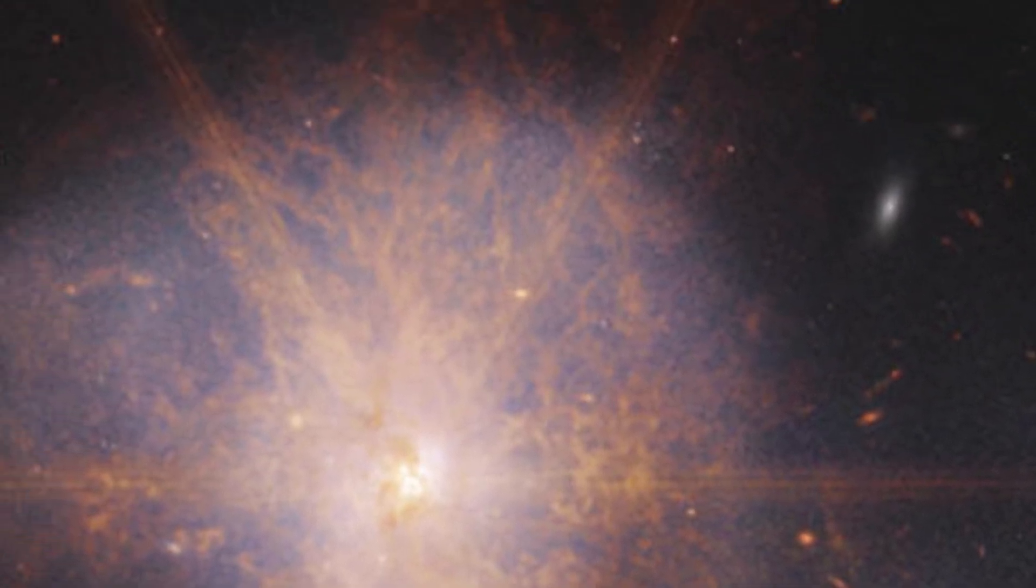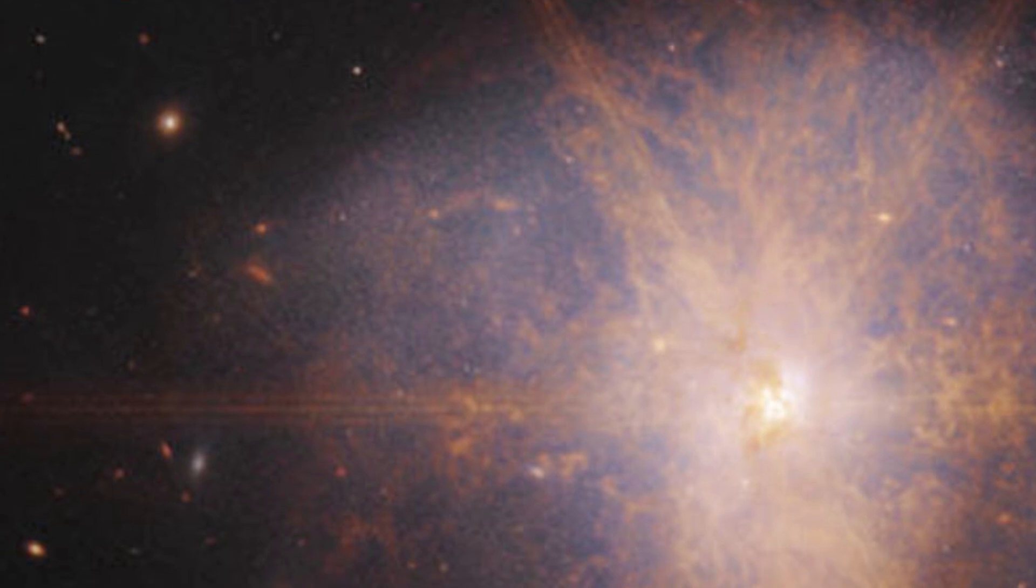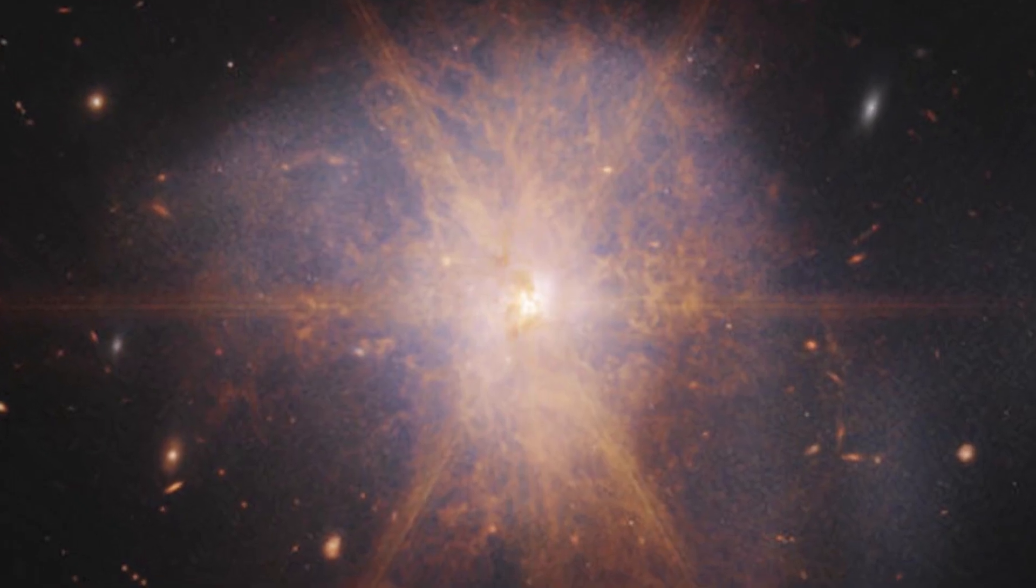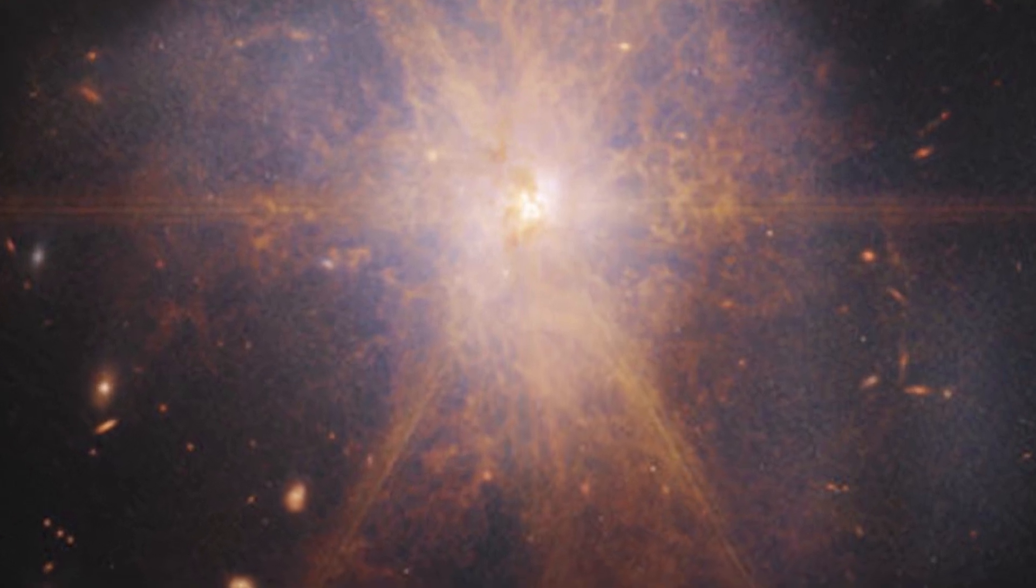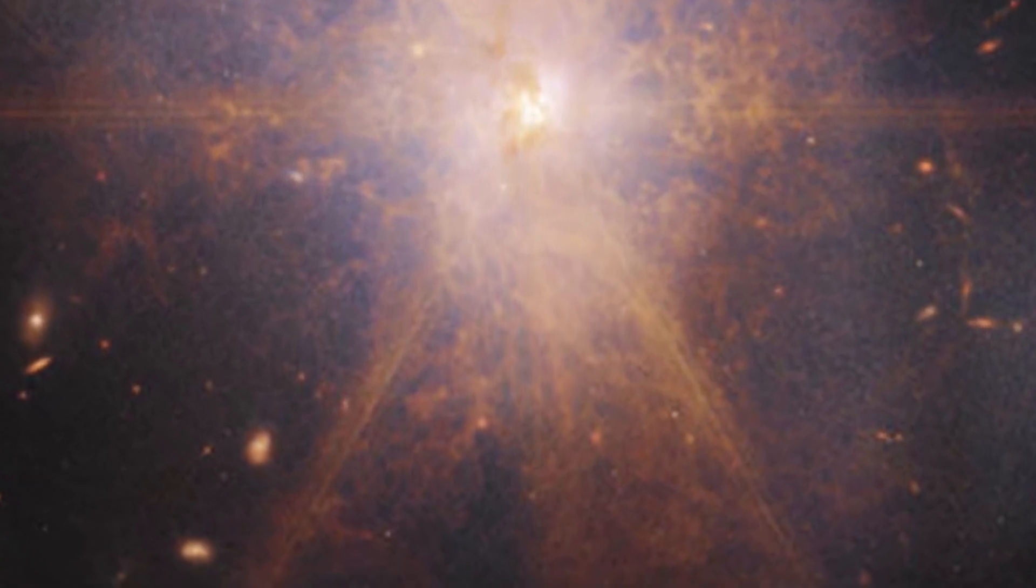This image also shows faint tidal tails extending from the outskirts of the merger, indicating the gravitational pull between the two galaxies. Finally, the reddish and orange streams and filaments represent scattered organic materials in ARP-220.